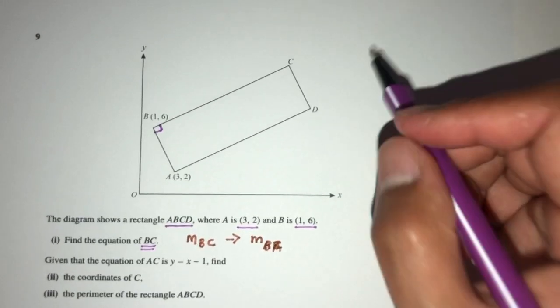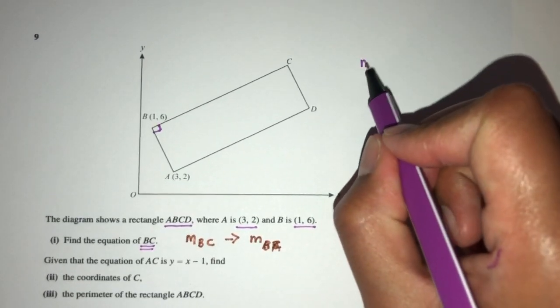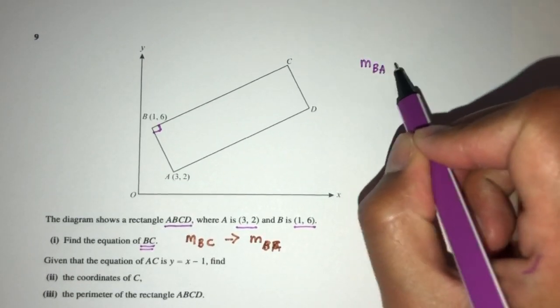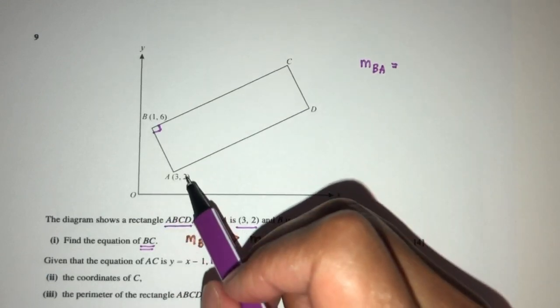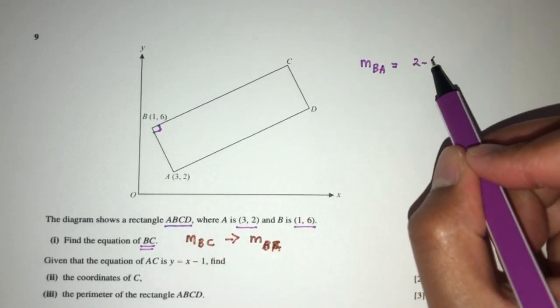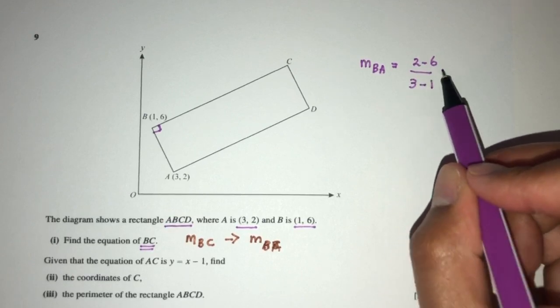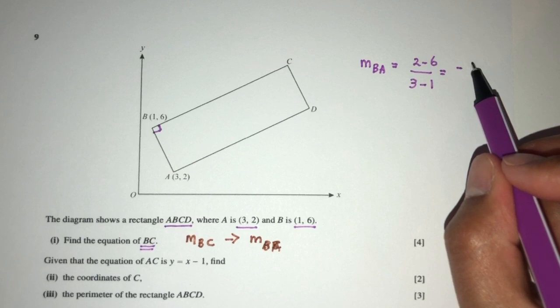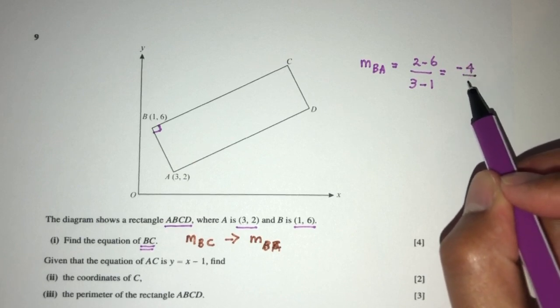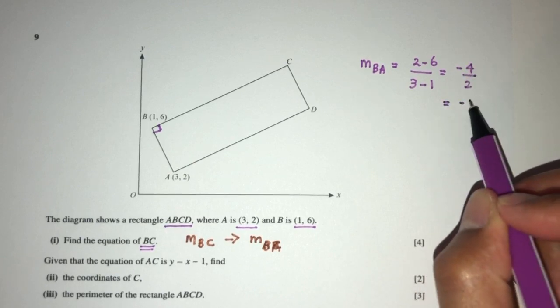So how would you find the gradient of BA? The gradient of BA will be Y2 minus Y1, so 2 minus 6 over 3 minus 1. That should be the value of minus 4 over the value of 2. That should be minus 2.